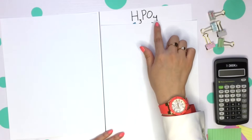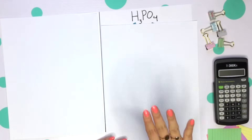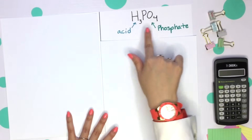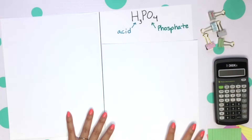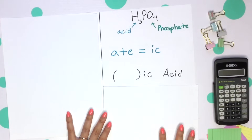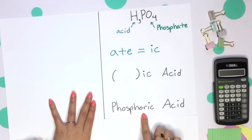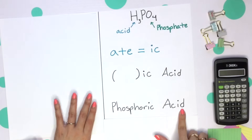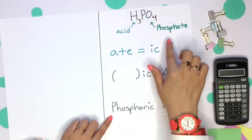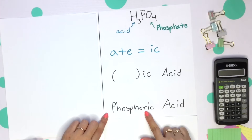If we're given H3PO4, there is oxygen so no prefix once again. The H tells us it's an acid. This is phosphate; the -ate goes with -ic. The name is phosphoric acid — we do add an R here as well. So for any PO4 or PO3, those phosphates or phosphites, they add an R.